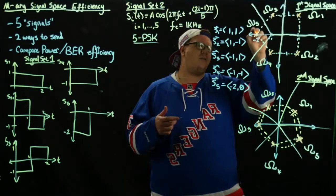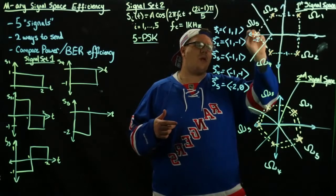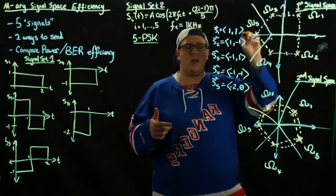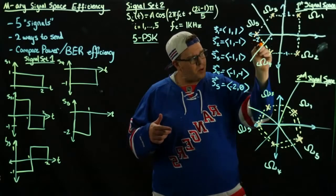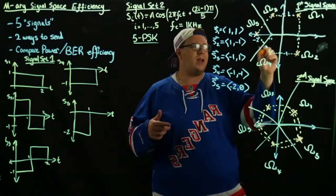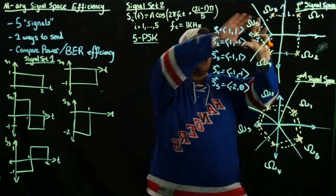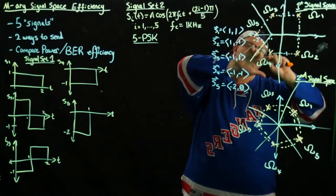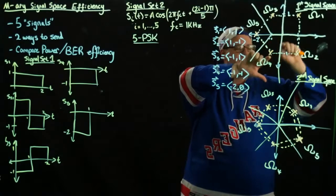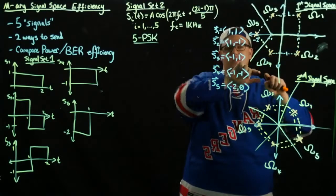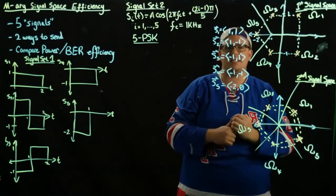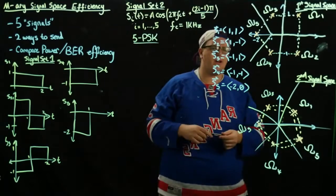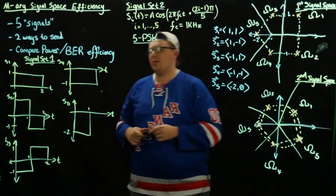For instance, there's a very high probability that if I send signal five, it will end up here. But there's some probability that is normally distributed out in every direction, so there is some probability that it will end up in decision region four even if I did send signal five. So we need to figure out what those probabilities are.